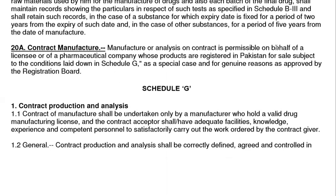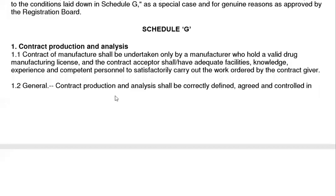Contract manufacturing and analysis is permissible on behalf of a licensee or a pharmaceutical company whose products are registered in Pakistan for sale, subject to conditions laid down in Schedule G with special and genuine reasons for approval from the Drug Registration Board. The contract of manufacture shall be undertaken only by a manufacturer who holds a valid drug manufacturing license, and the contract acceptor shall have adequate facilities, knowledge, experience, and a competent person.